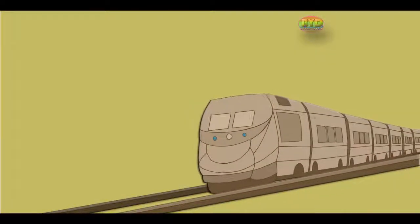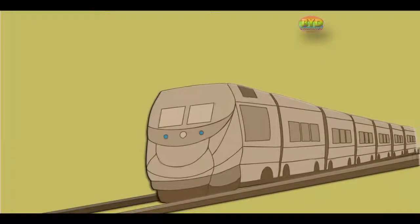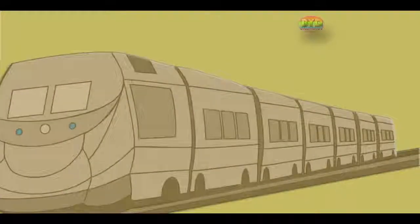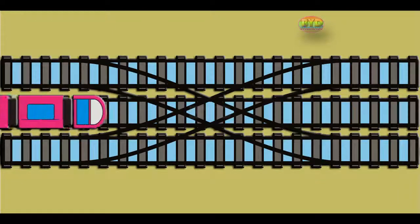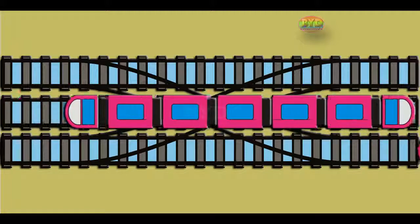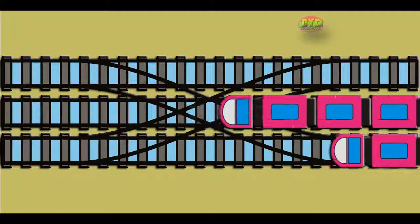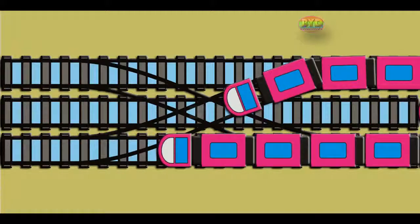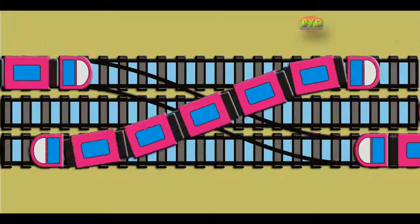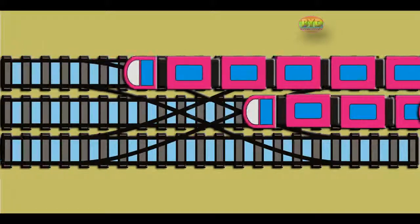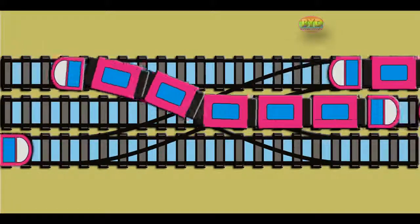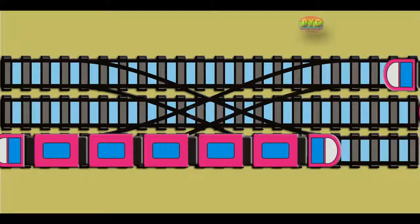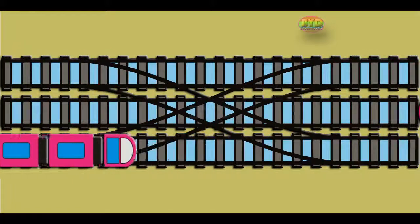Have you ever wondered how a train changes track while running? A special mechanical arrangement is made, known as a railroad switch, which consists of a pair of rails. The switching rails can direct or guide the train either on a straight path or on the diverging path, which a curved rail line establishes.